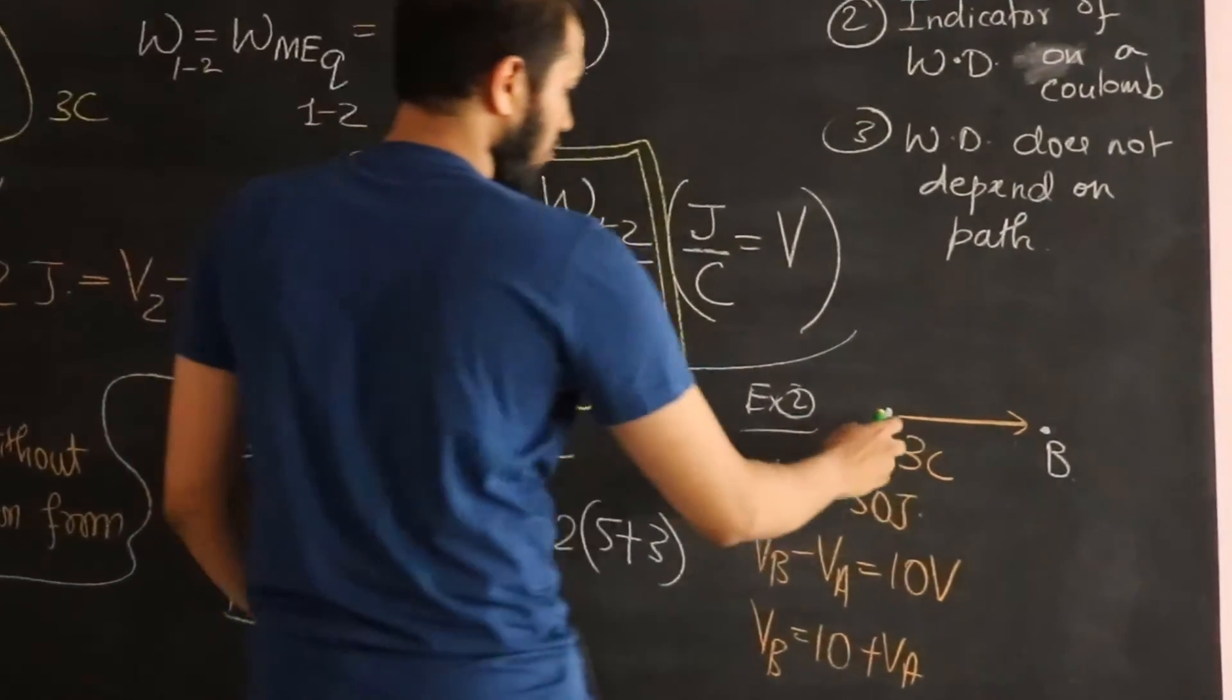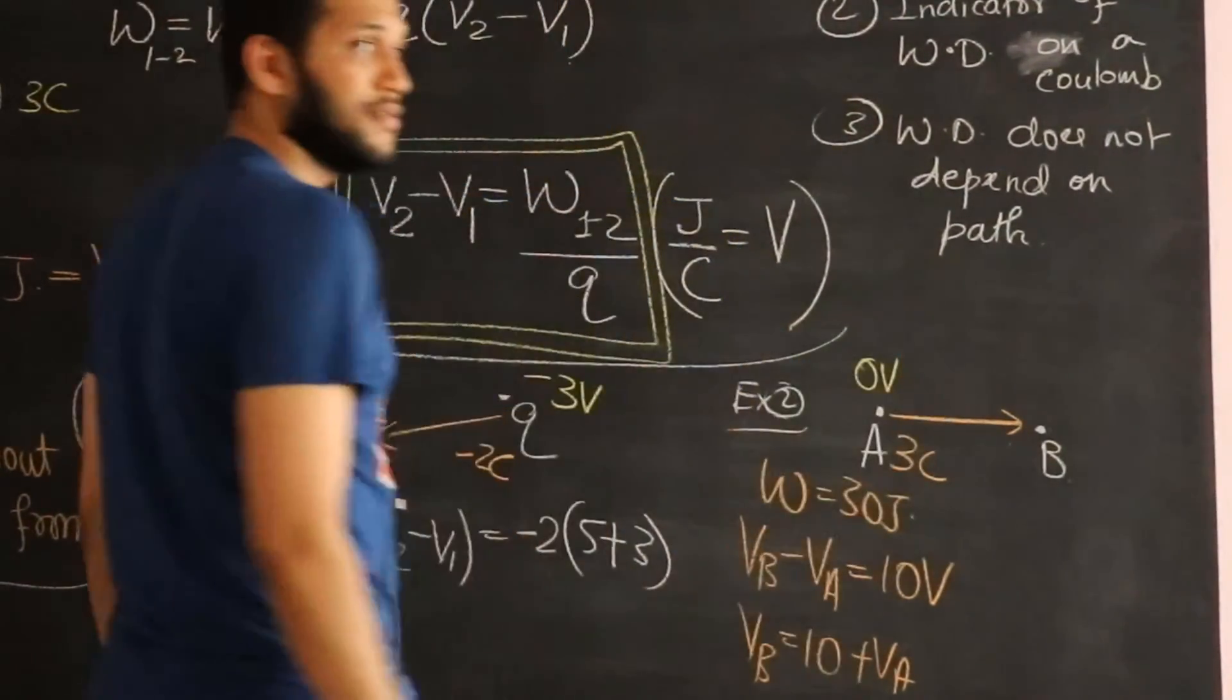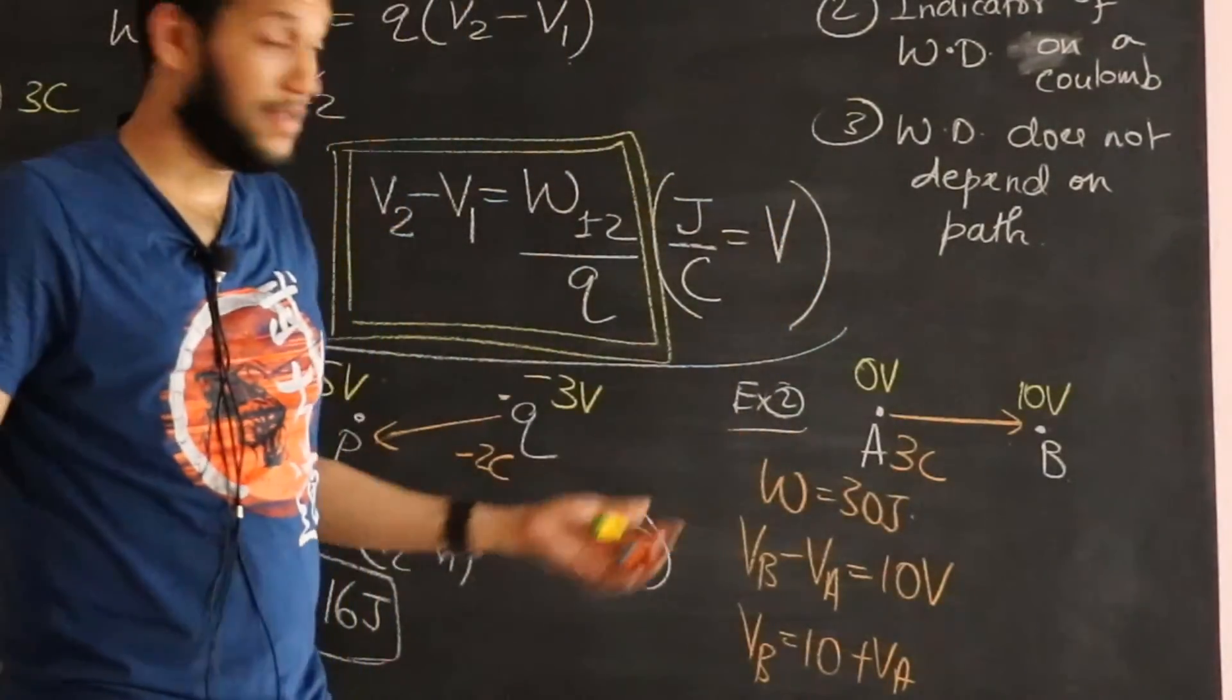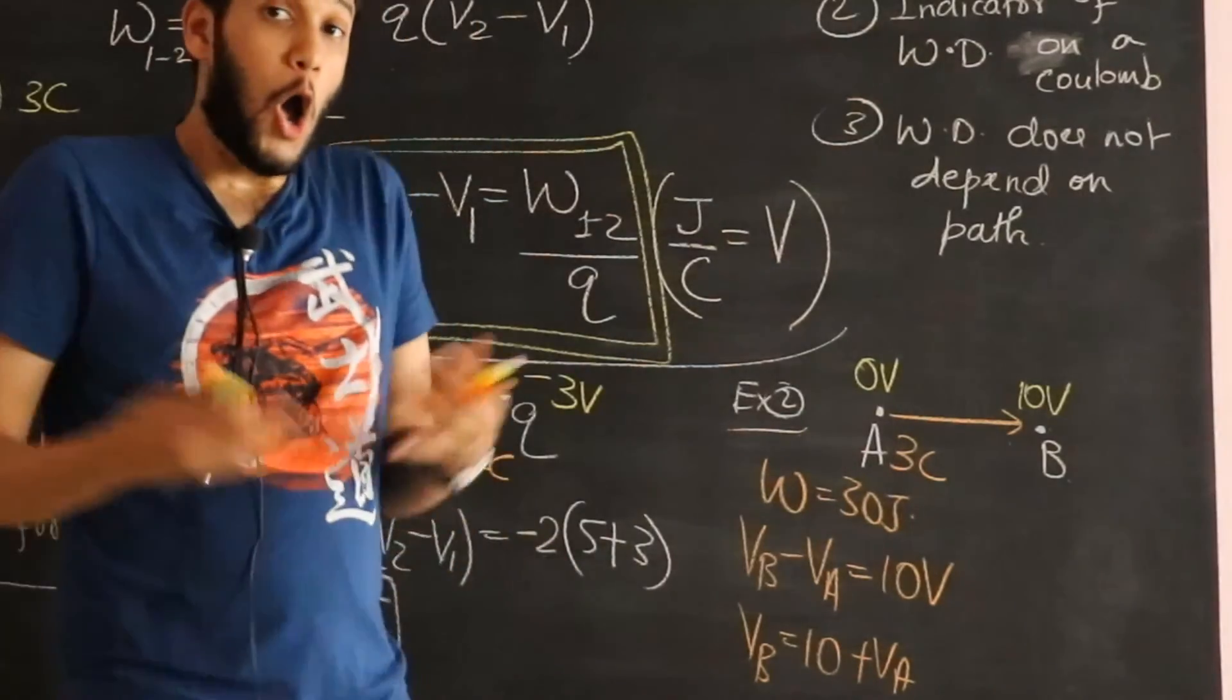Well, I could say VA is 0 volts and VB is 10 volts. That's fine. Because you'll end up with the same answer.